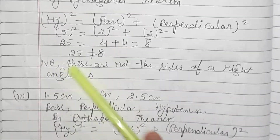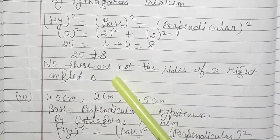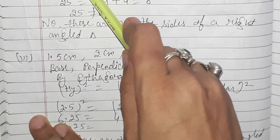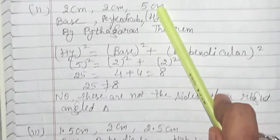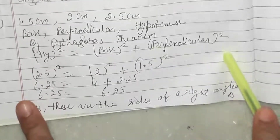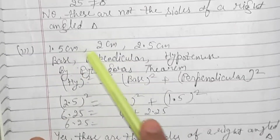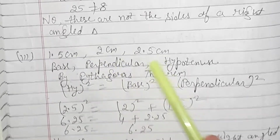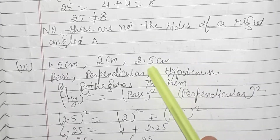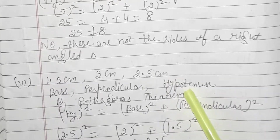4 + 4 = 8, so 25 is not equal to 8. These are not the sides of a right angle triangle. 2, 2, and 5 are not the sides of a right angle triangle. Now the third and last part of this question.